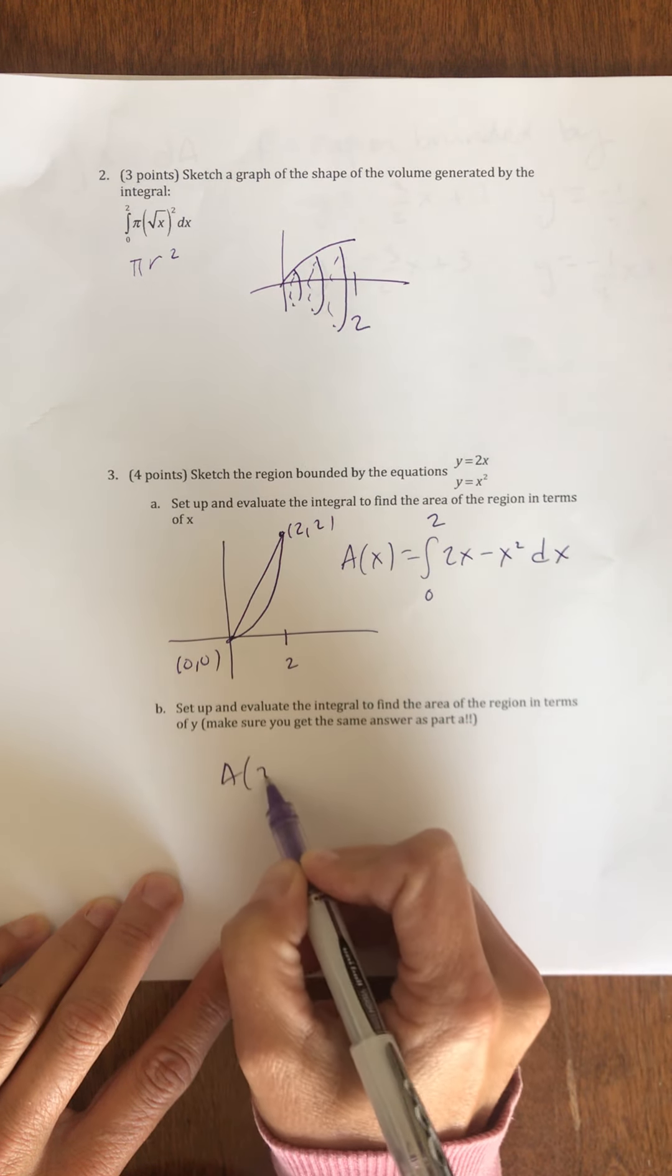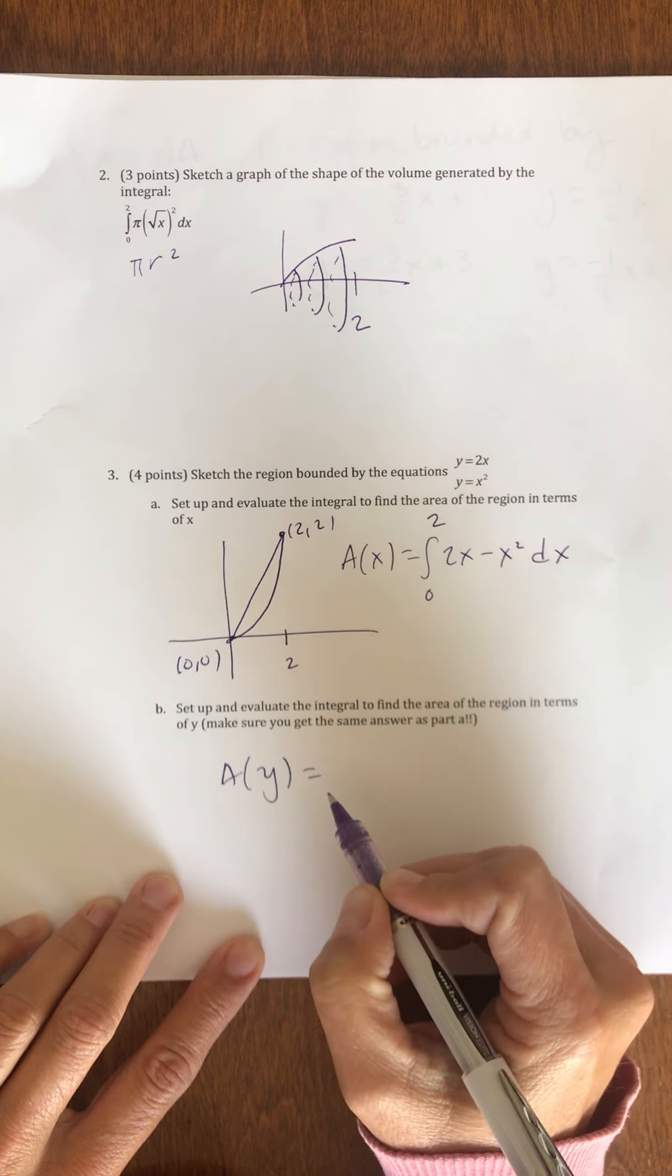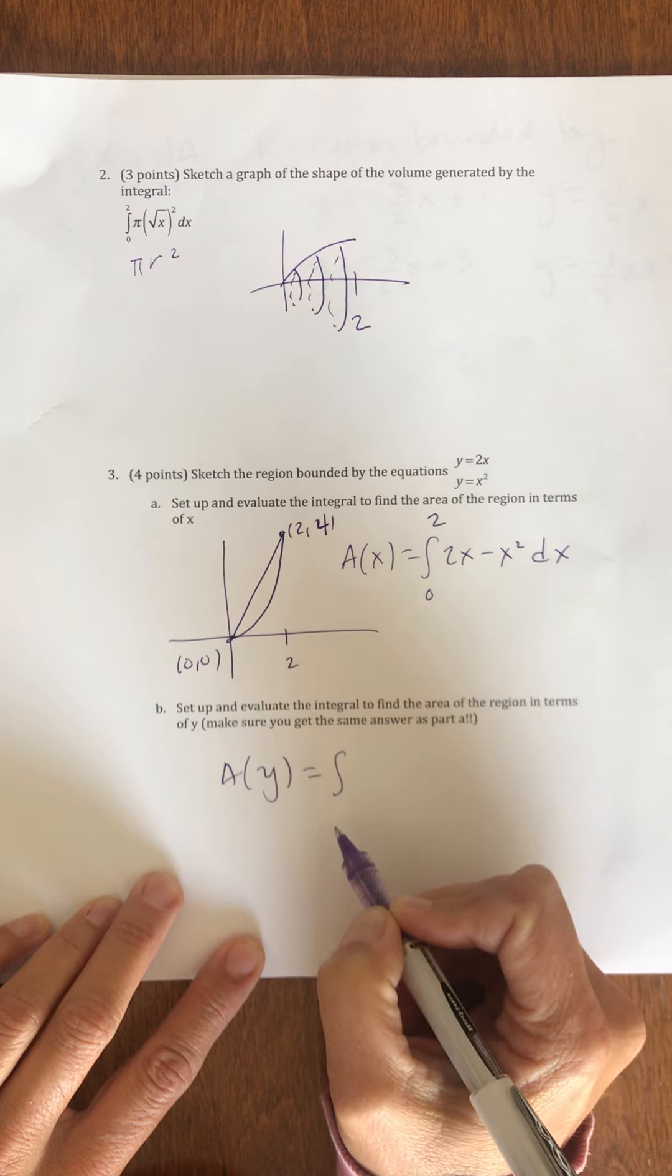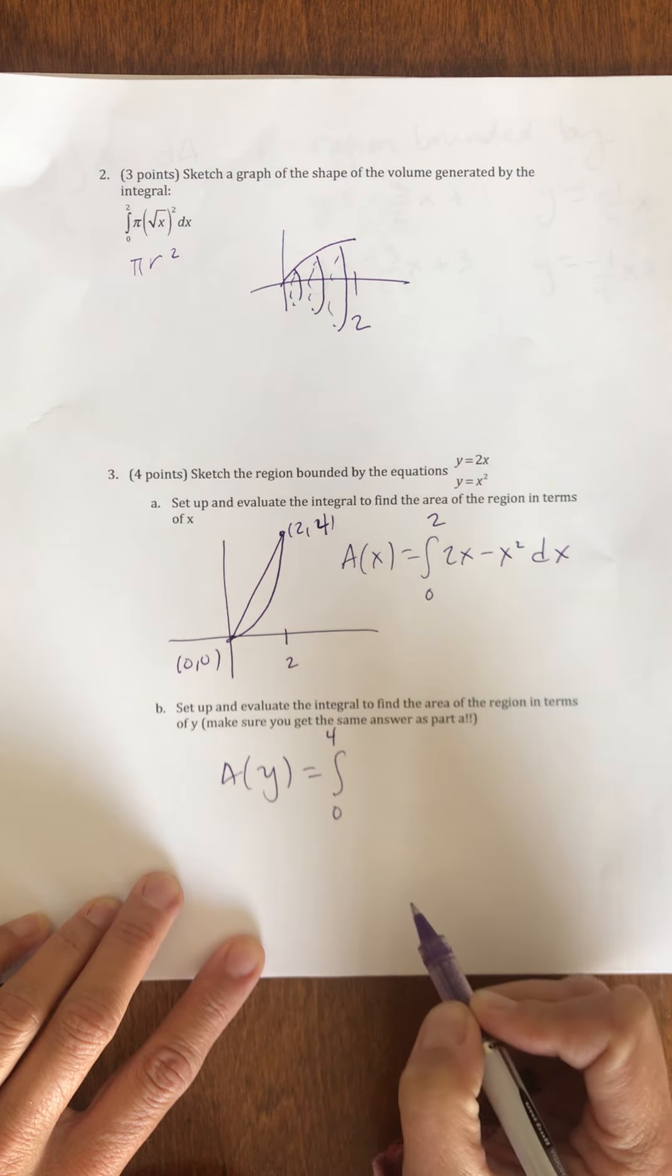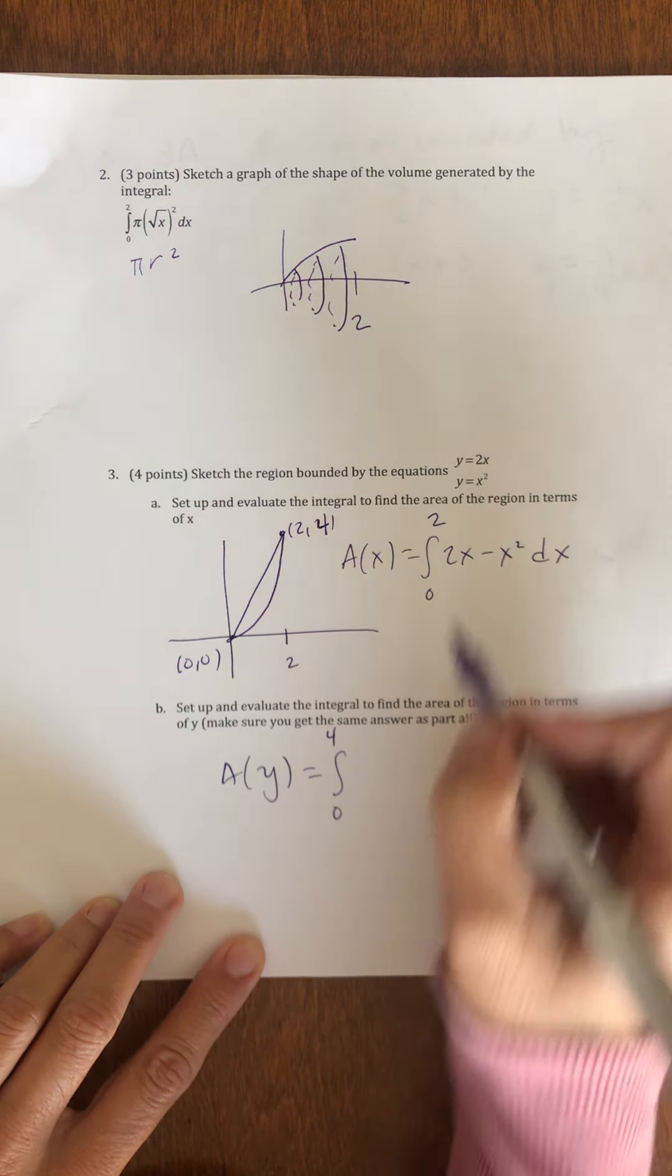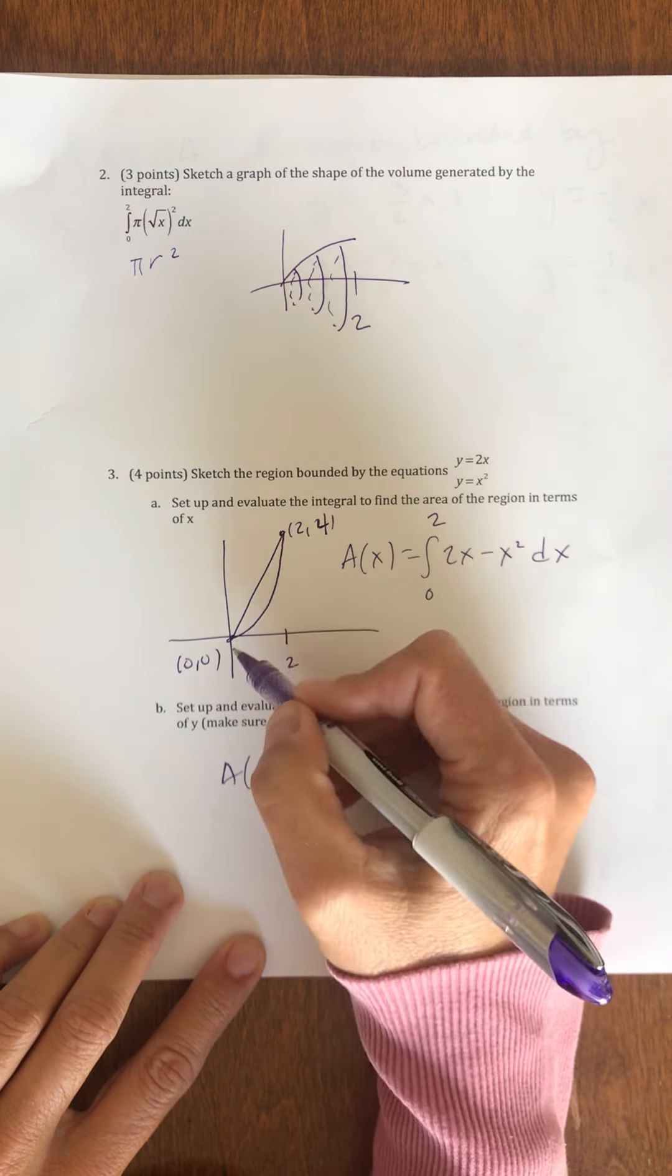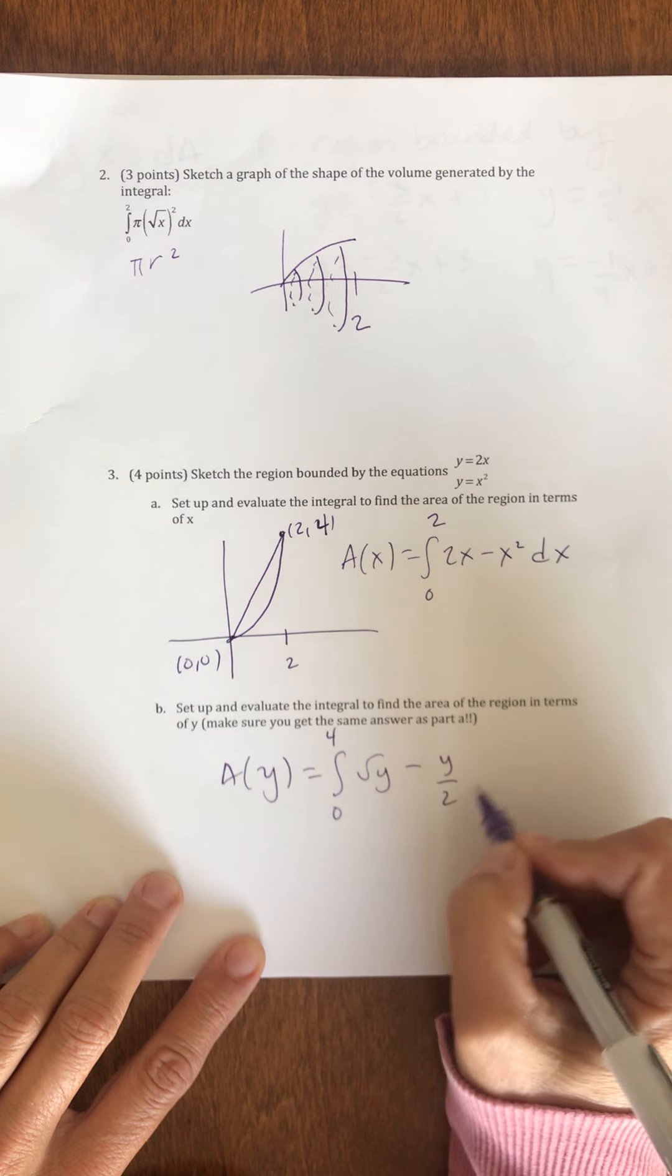My area in terms of y. My y-value is also, that is not a 2, this is 2, 4. My y-values go from 0 to 4. In terms of y, I want to do right minus left. The parabola is on the right, so rad y minus the line is on the left, y over 2.